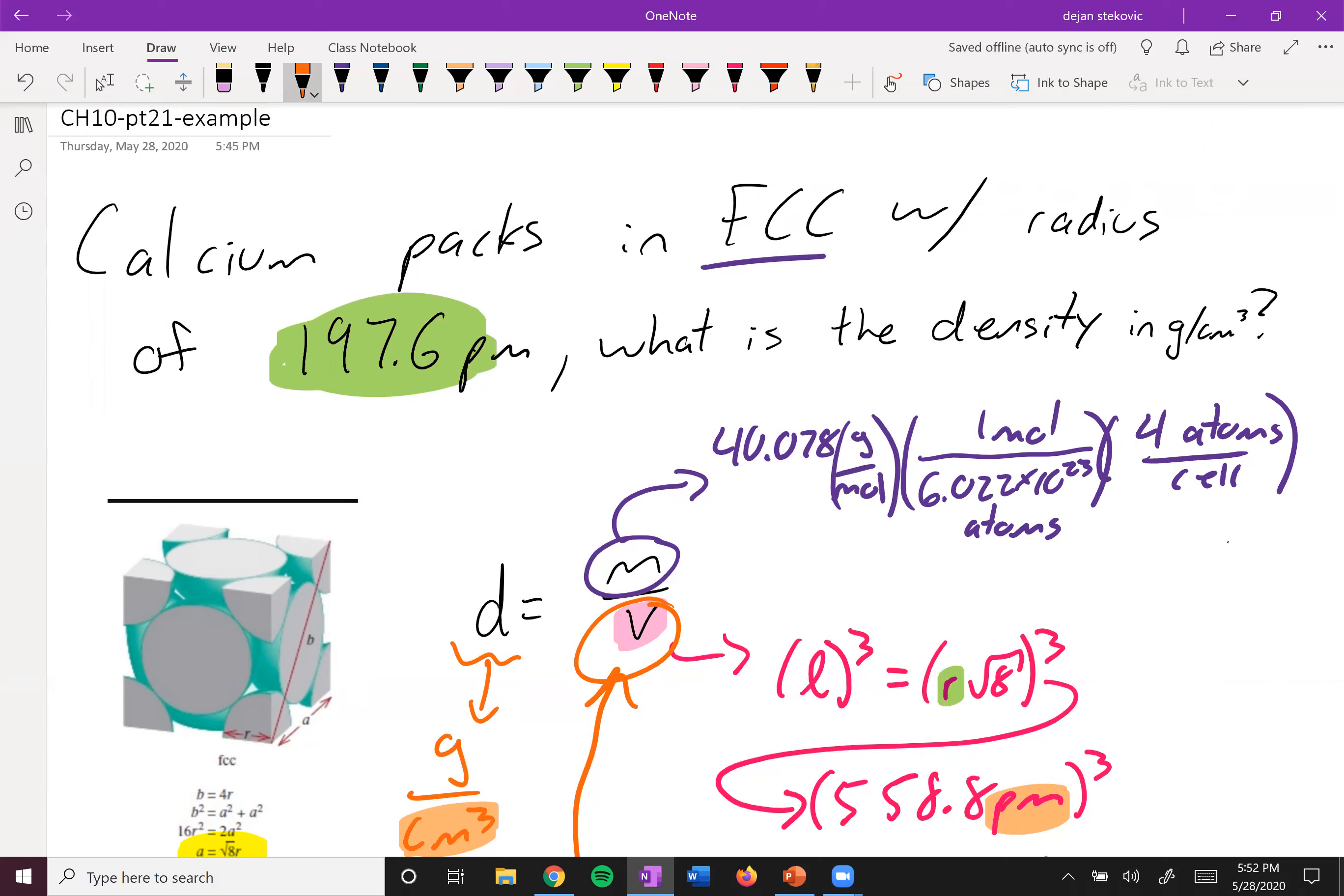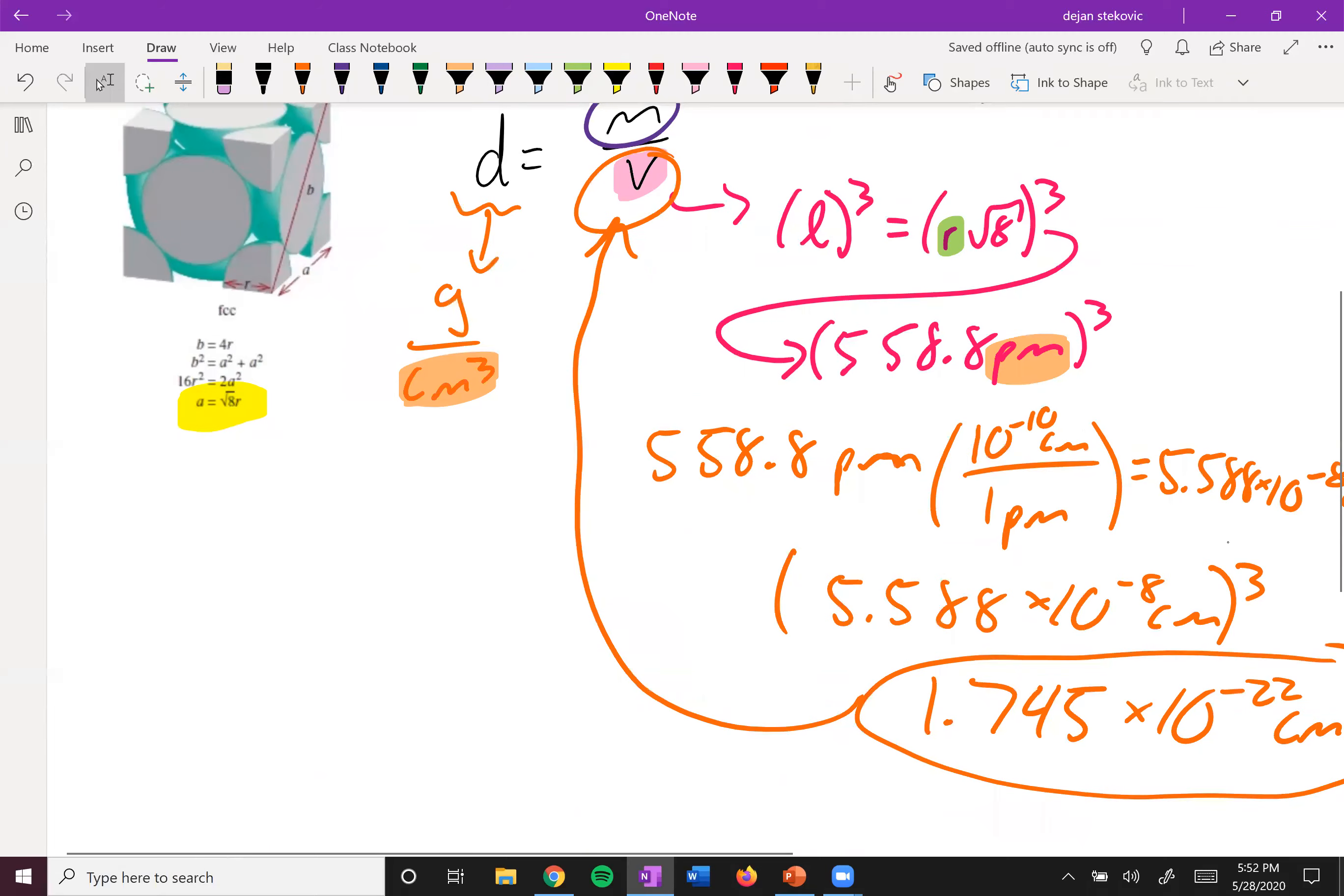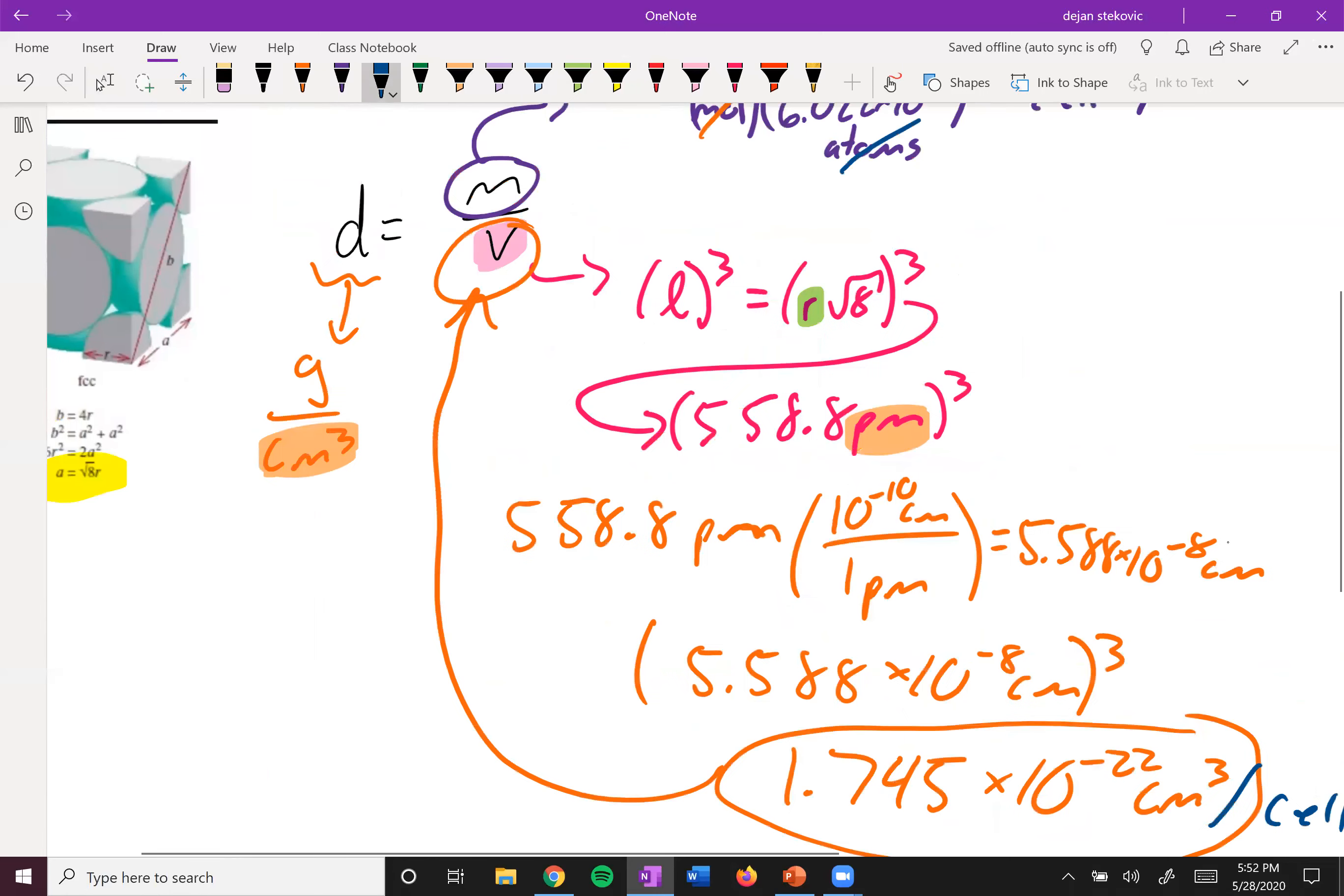So what's going to happen here is that the mole and mole will cancel out. Atoms and atoms will cancel out. And then you'll be left with grams per cell. Technically, this volume also has units of grams per cell. And so the cell parts ends up canceling out.